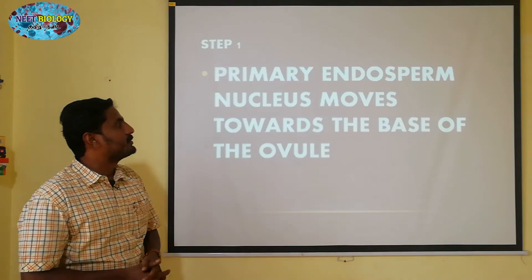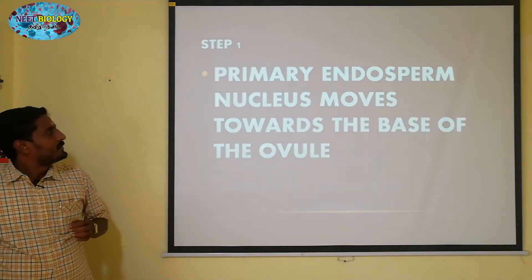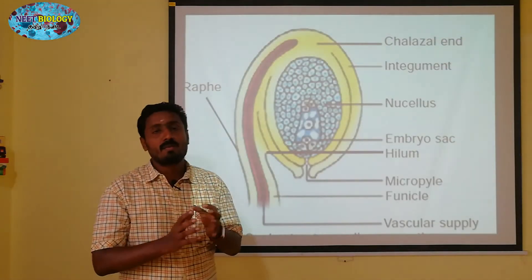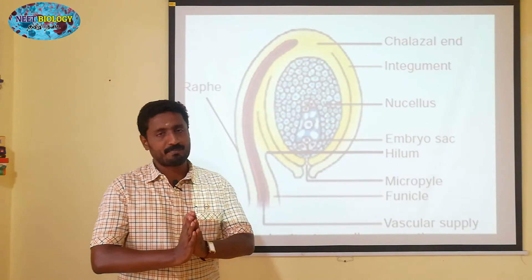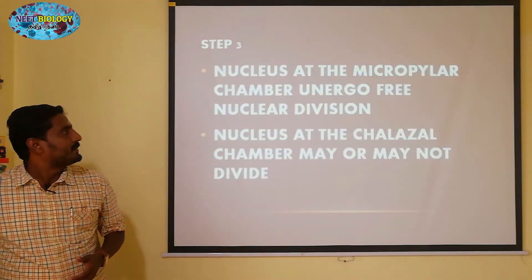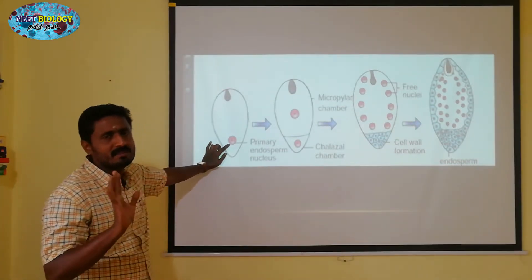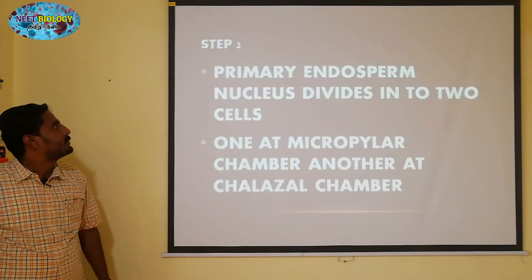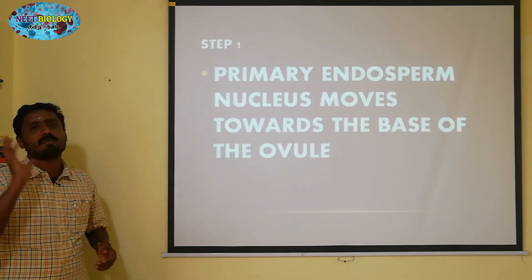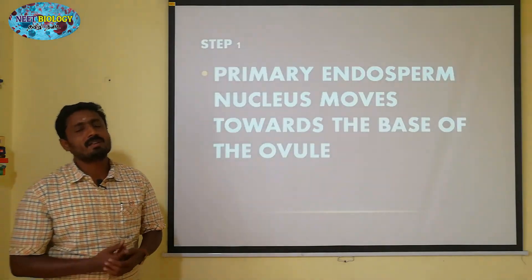Step 1: The primary endosperm nucleus moves towards the base of the ovule. This is the base of the ovule. The primary endosperm nucleus moves towards the base region of the ovule.